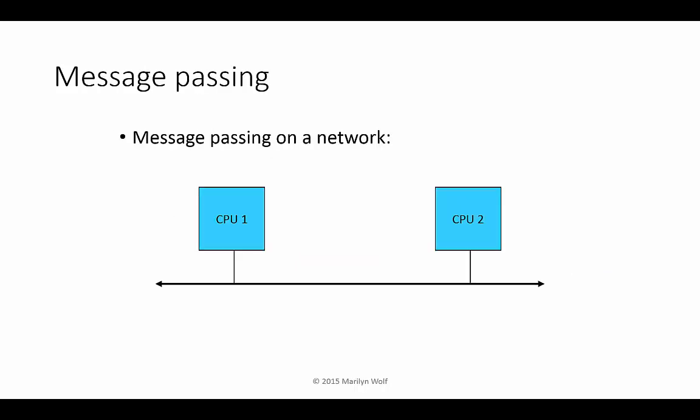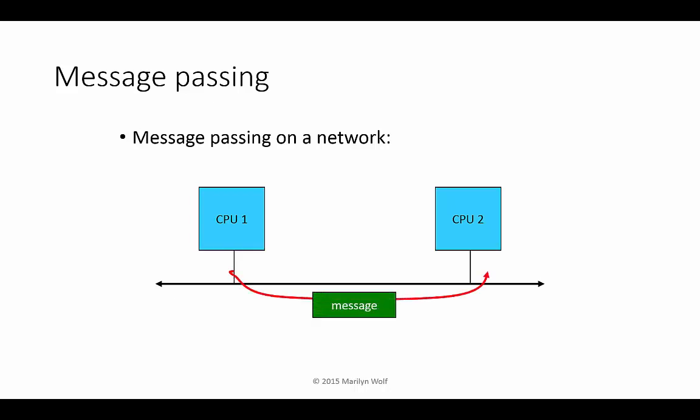In message passing, we have two CPUs on a bus. Again, these can also be two processes on the same CPU that communicate. CPU1 sends a message along the bus that is then received by CPU2.